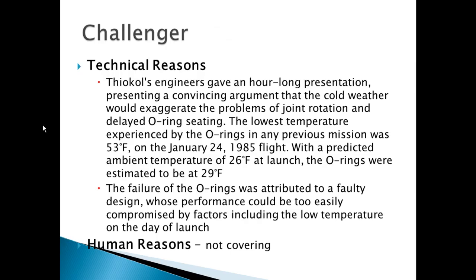Looking at both the Titanic and Challenger examples, we can clearly see there were design flaws and human errors, which led to further research and improvements. In the case of Titanic, communication warnings were delayed in reaching the captain — a human error. In the case of Challenger, engineers shared their apprehensions, but there had already been three delays in the launch and management did not want any further delay. Those are human error aspects we won't focus on here — we are keeping focus on the technical side.